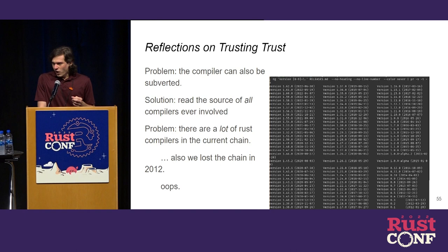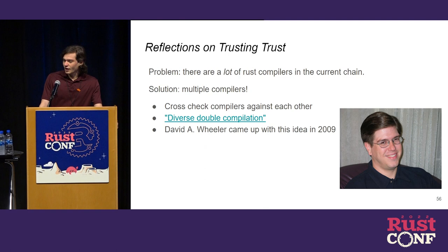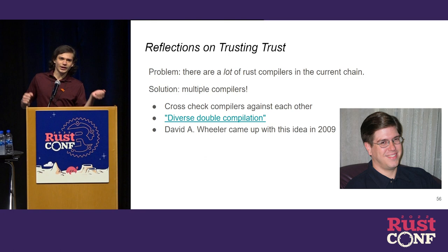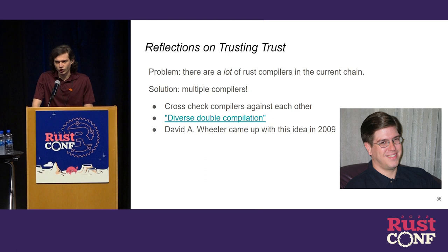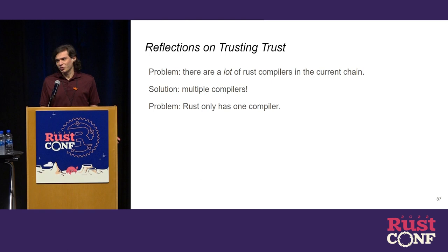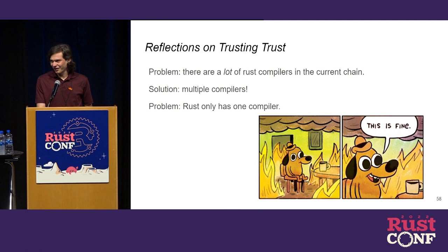There's a solution: a guy named David A. Wheeler came up with an idea in 2009 called Diverse Double Compilation. The basic idea is you take a bunch of compilers and compile them with each other — if you compile Clang with GCC, compile that with GCC again, compile Clang again, and end up with the same compilers you started with, then you're pretty sure it's trustworthy. It's very hard to sneak a bug through that way. The problem for Rust is we don't have multiple compilers — we only have one compiler, the official compiler.